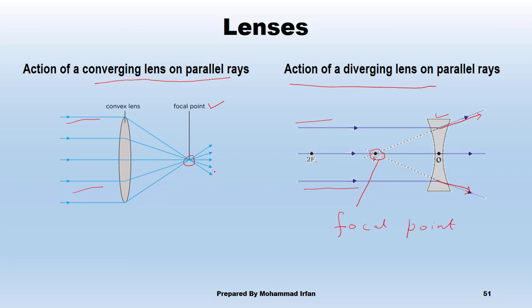The focal point for converging lenses is real, because this focal point is found by the passing of actual rays. Whereas the focal point for diverging lenses is virtual, because it only appears to be at that point — the rays are not actually crossing each other.